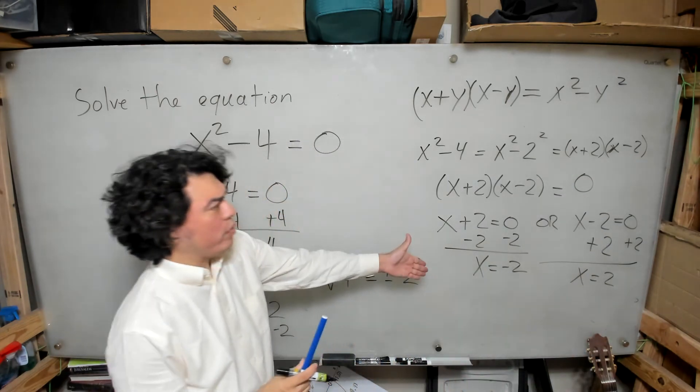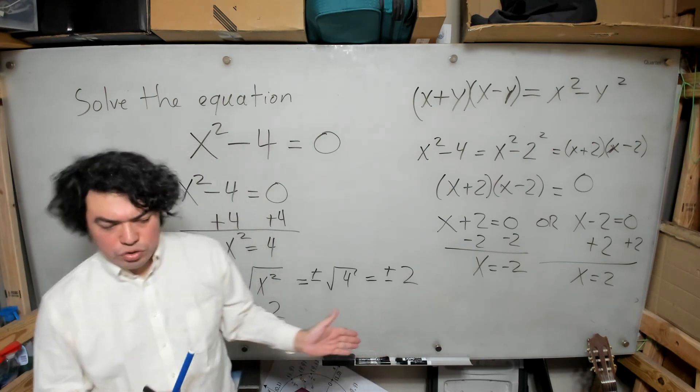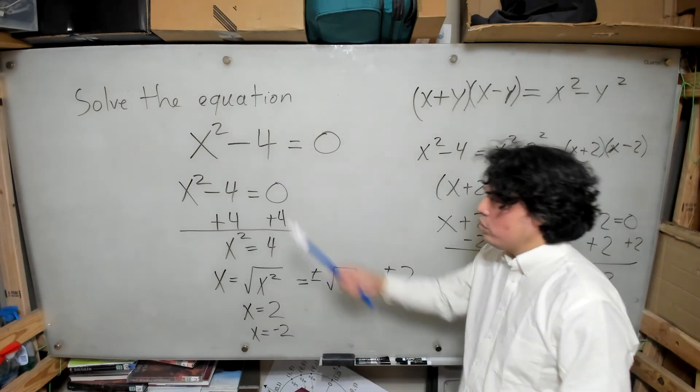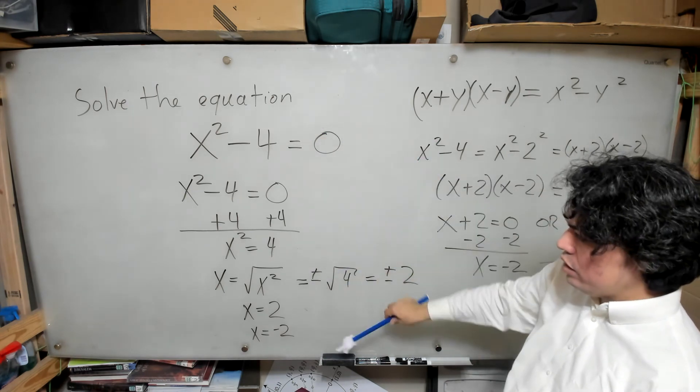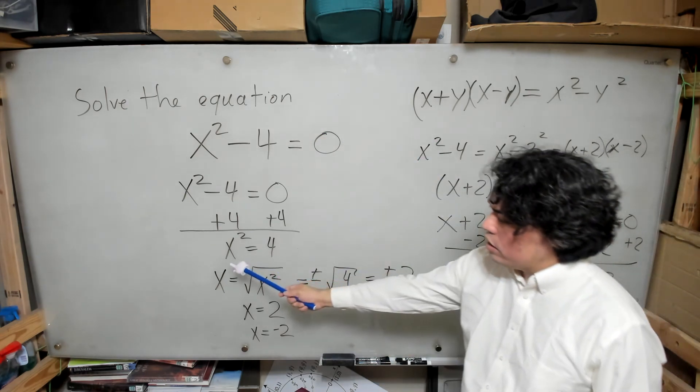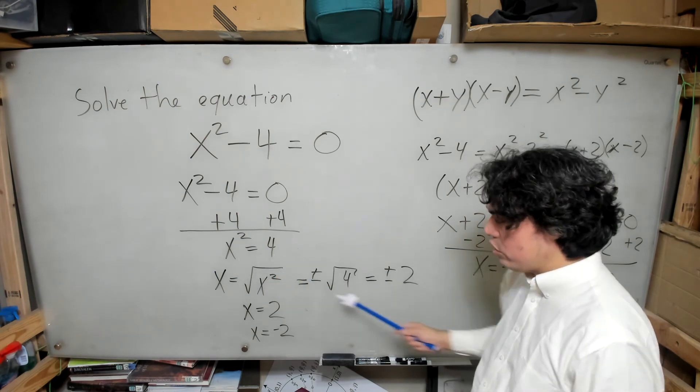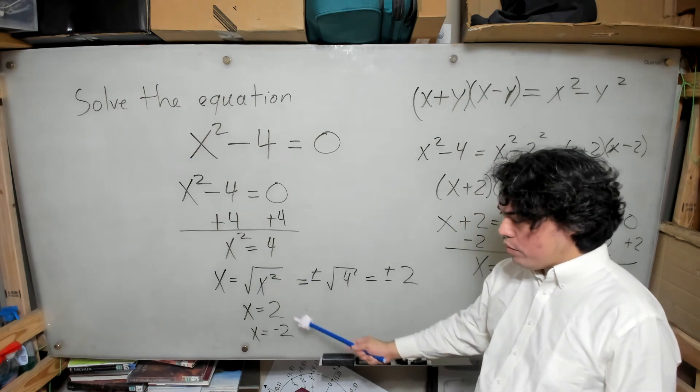And so again, we recover the two solutions to this equation. Here we used the square root technique where we set the sole x square term equal to the number and then we take the square root so that we can recover the two solutions.